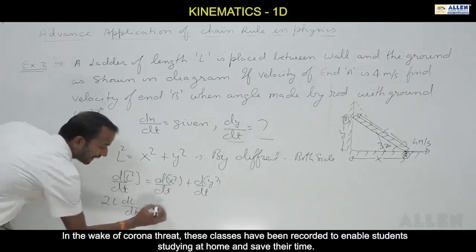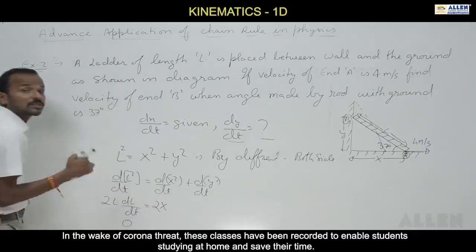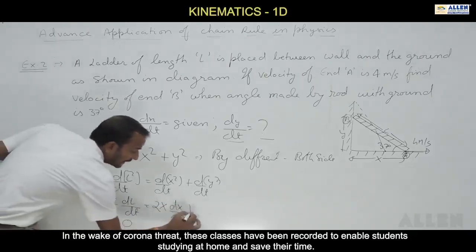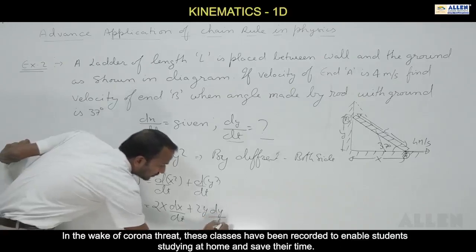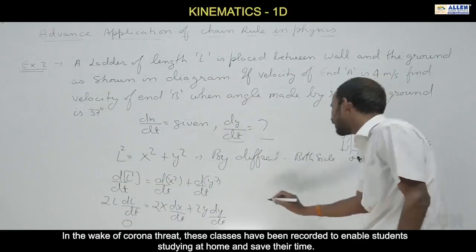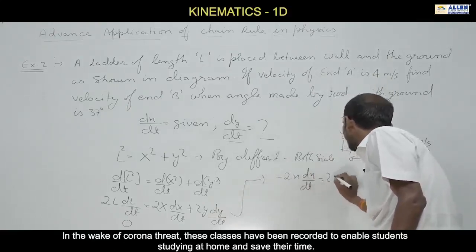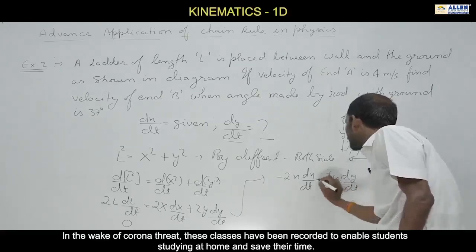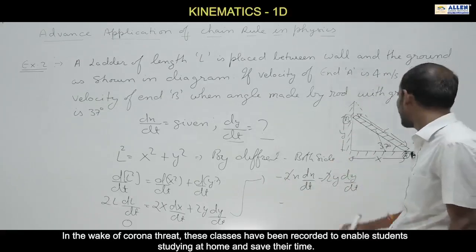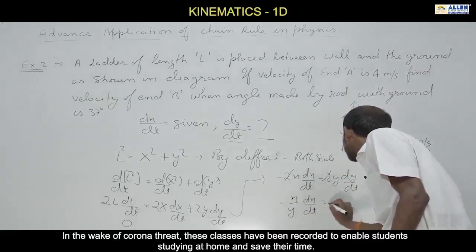So the equation reduces to: 0 = 2x · dx/dt + 2y · dy/dt. Here, differentiating x² gives 2x, and the chain rule continues — we need how fast x is changing with respect to time, which is dx/dt. Similarly, differentiating y² gives 2y · dy/dt by the chain rule.